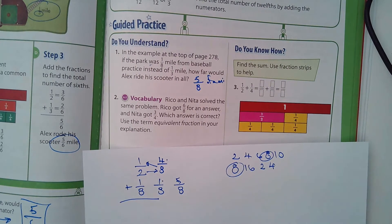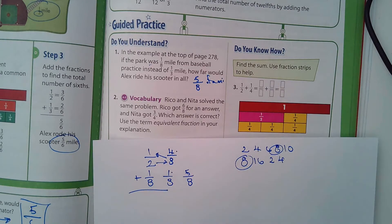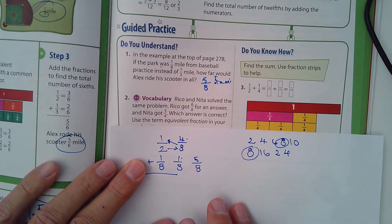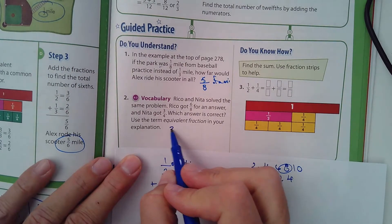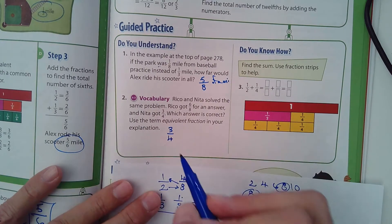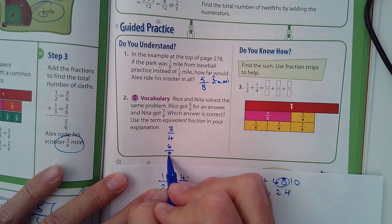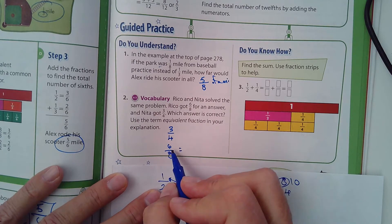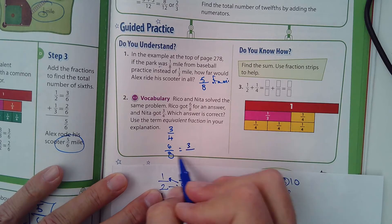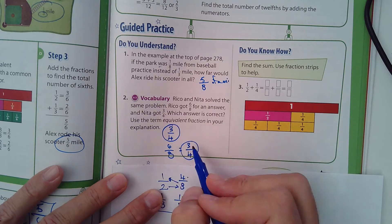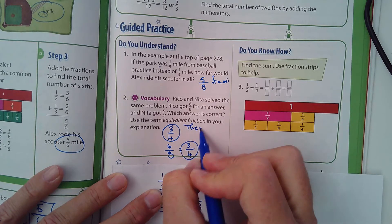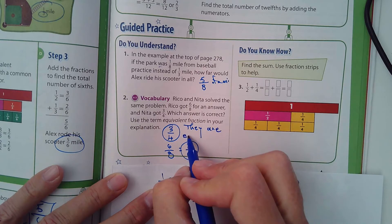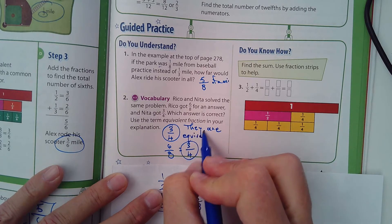For number 2, it says Rico and Nita solved the same problem. Rico got 6/8 for an answer and Nita got 3/4. Which is correct? Let's look at this. We can't reduce 3/4 into anything else, but 6/8 we can. If I divide each side by 2: 2 goes into 6 three times, 2 goes into 8 four times. Yeah, they are equivalent fractions.